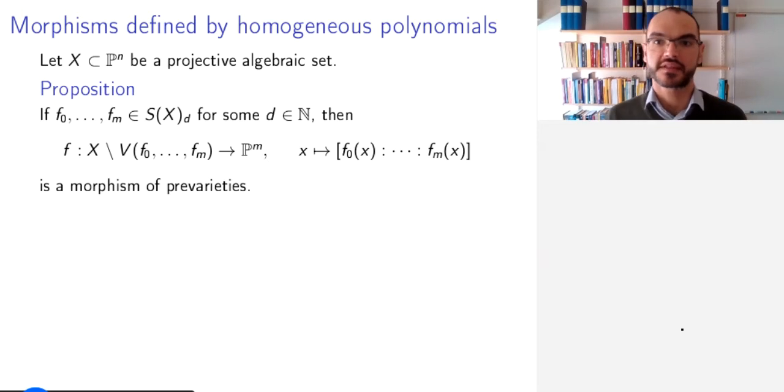First of all, note that this map is well defined. So we need to show that if we represent x by a different affine point λx, we will get the same image. But this is the case because this λ will manifest itself as λᵈ in all coordinates. And since all polynomials are homogeneous of the same degree, we will just get a factor λᵈ throughout that gives us the same point. So this is well defined.